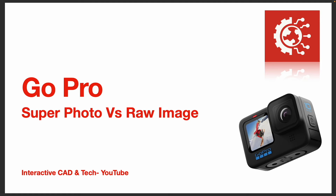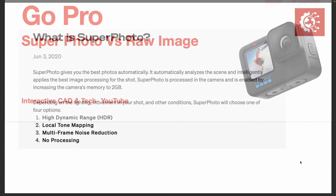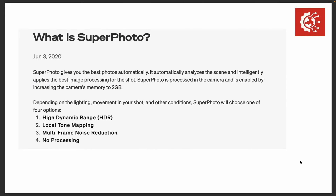Just to get started, I've put up a description of what Superphoto is. Superphoto gives you the best photos automatically — the idea is you hit the take a photo button and the AI in the camera picks the best scenario for the best picture at that time. It analyzes the scene and applies the best imaging processing for the shot. It's enabled by increasing the camera's memory to two gigabytes and over, which is easily done. This explanation is from the GoPro community, so if you go to gopro.com and go to support, this is the explanation GoPro actually give.